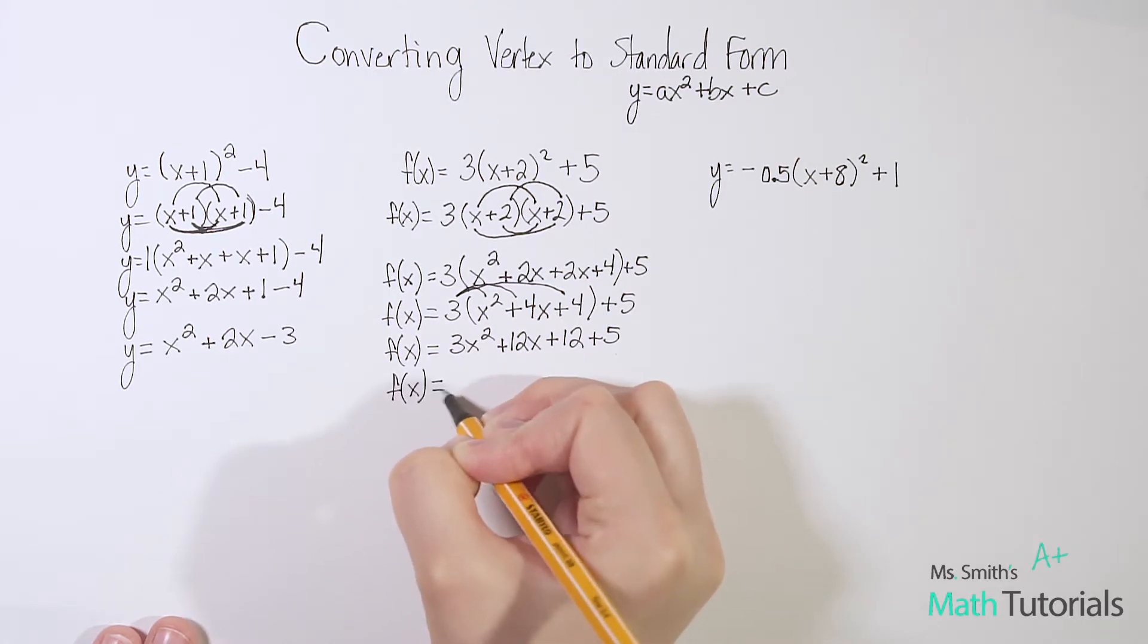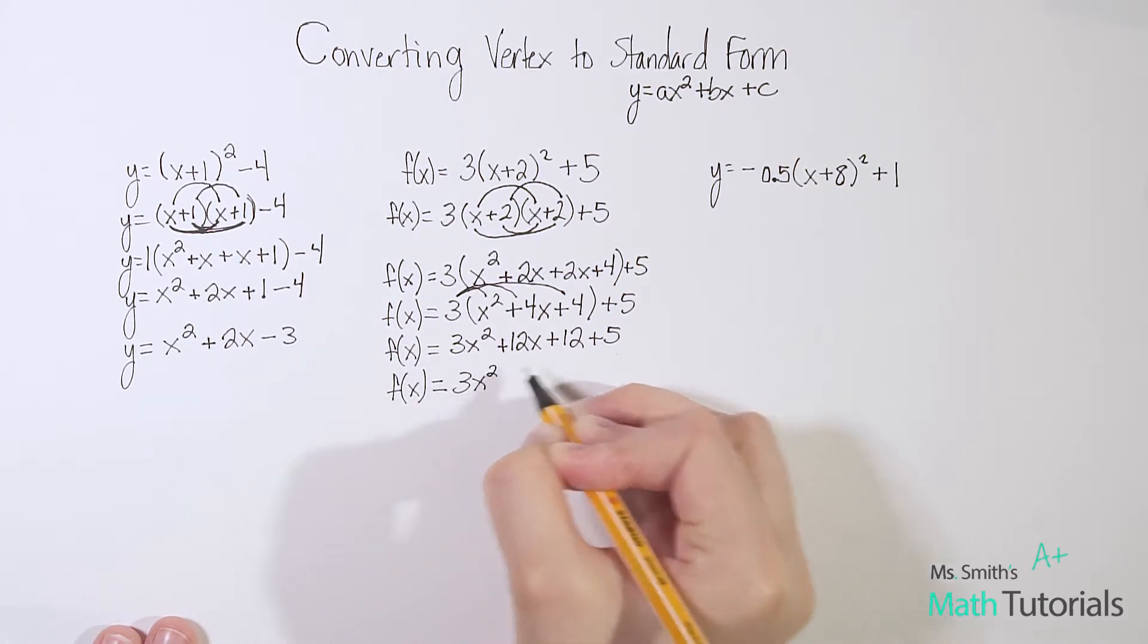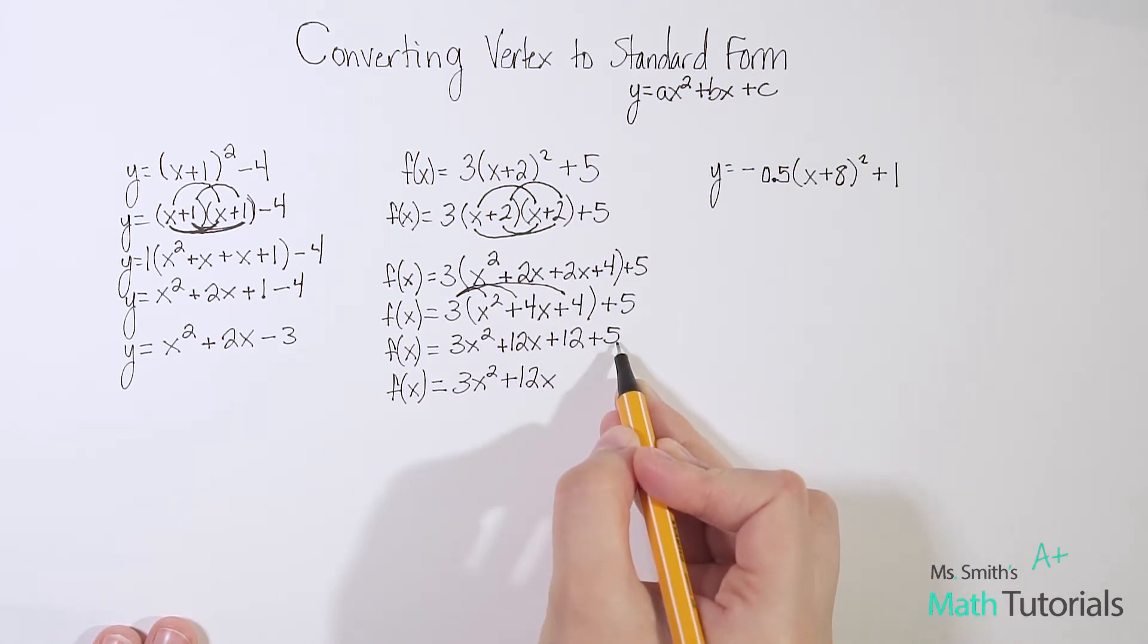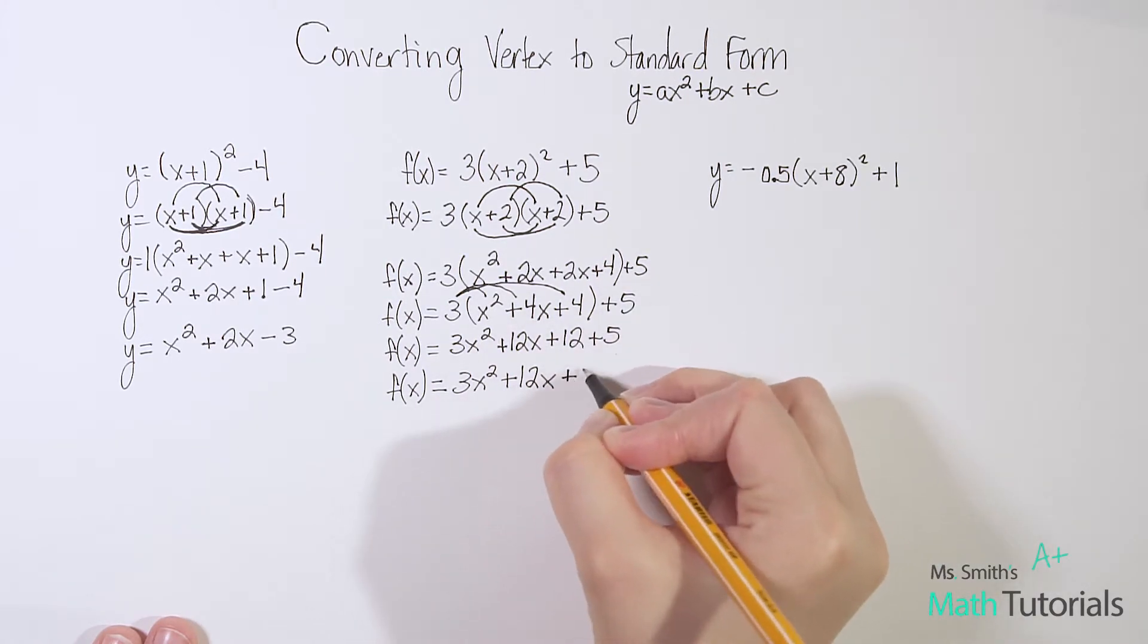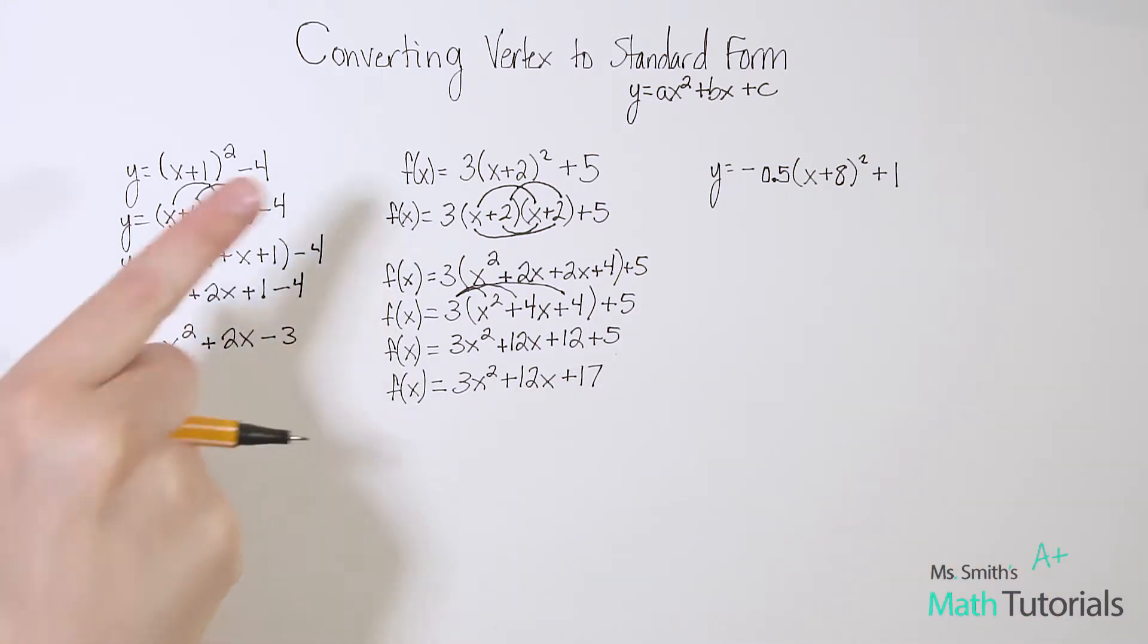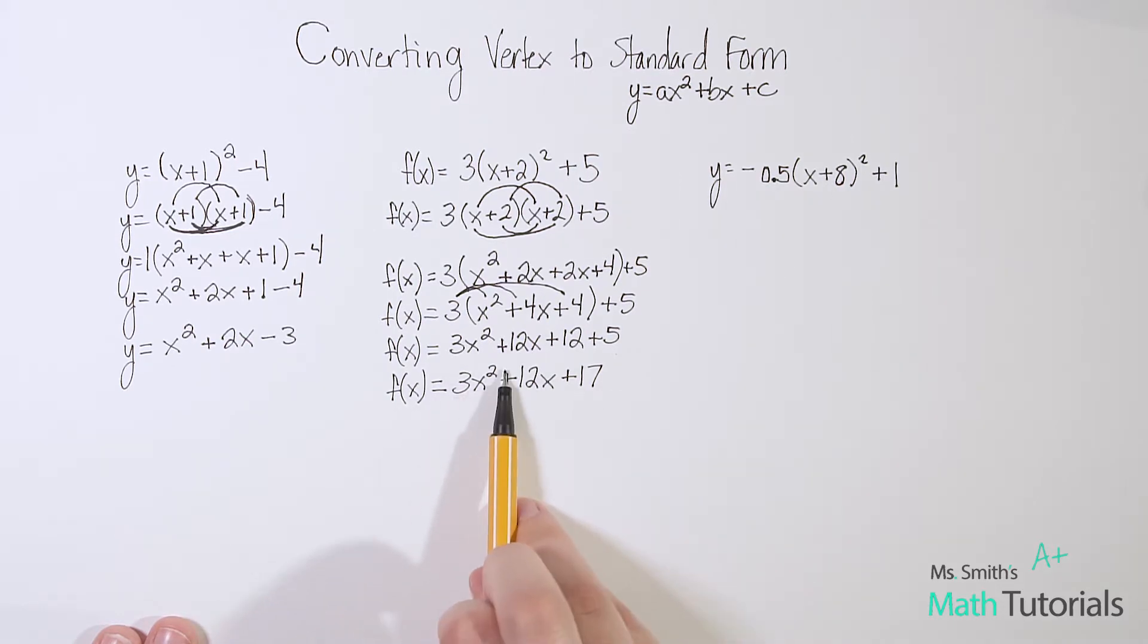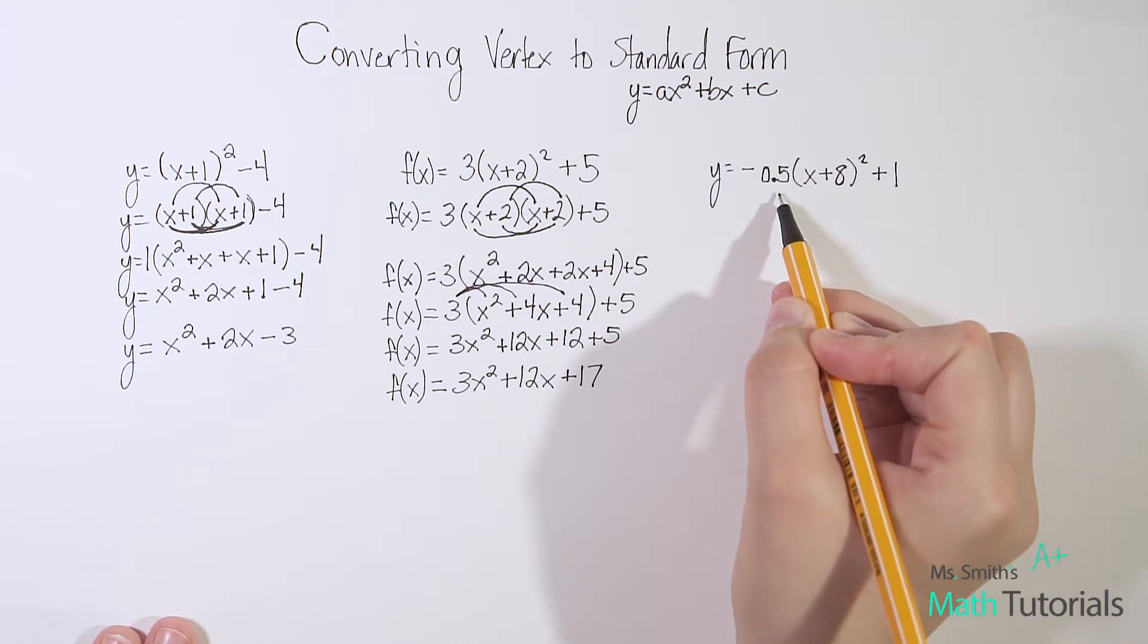So f(x) = 3x² + 12x. 12 + 5, that's going to give me positive 17. So you could see I went from vertex form to standard form. Of course, I would always want to double check and say am I in standard form, x² x and c? Yes. And are there any other like terms to combine? No. So I know I'm done. Let's look at one more example.